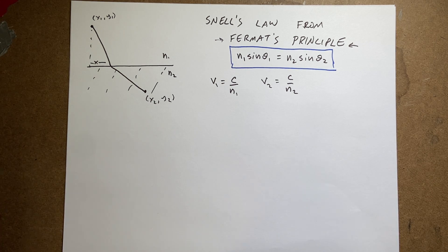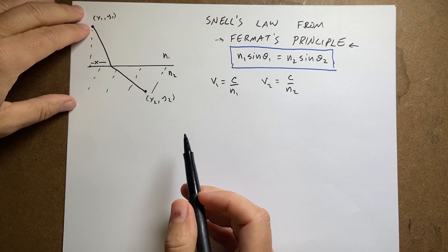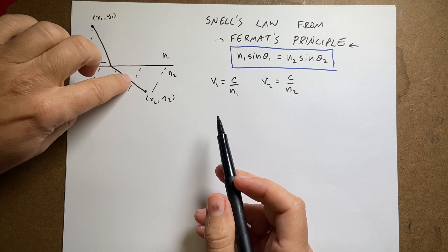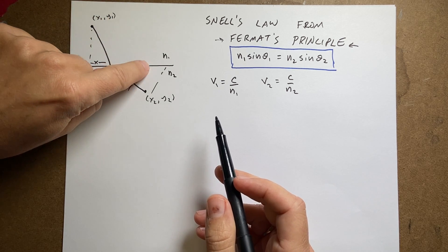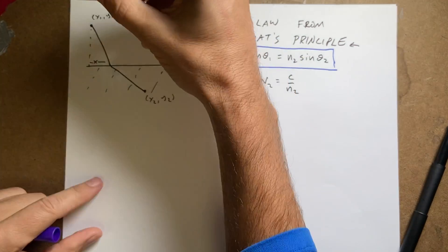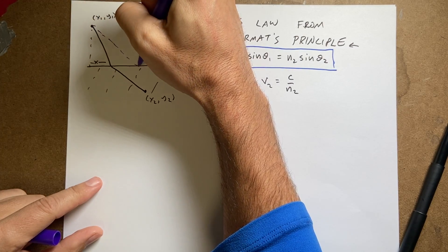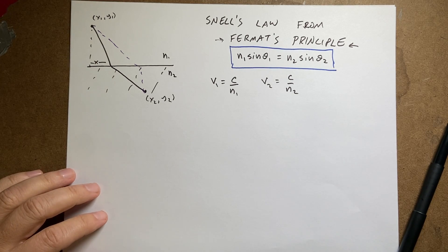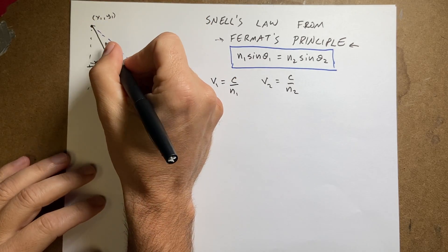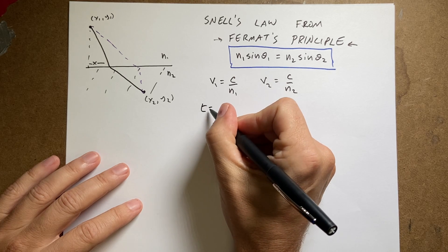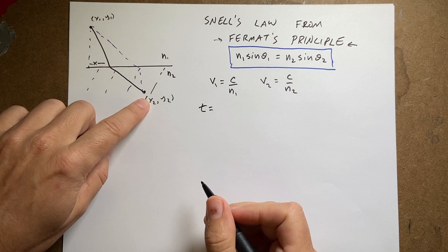I want to make time a function of just one variable. If I start at x1, y1 and go down to x2, y2, all these paths — assuming light goes in a straight line in each medium — pass through a point on the interface. I can parameterize this in terms of x. The total time from 1 to 2 is the time along path 1 plus the time along path 2.